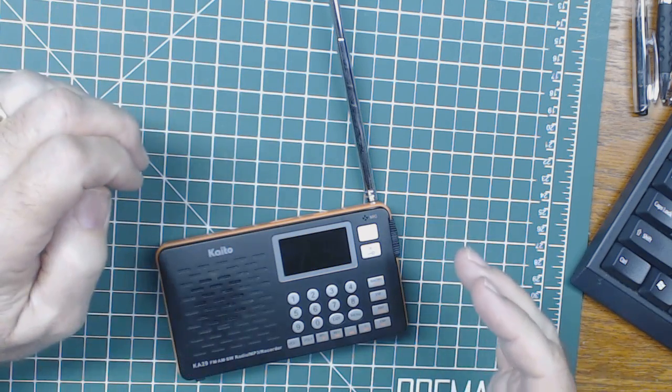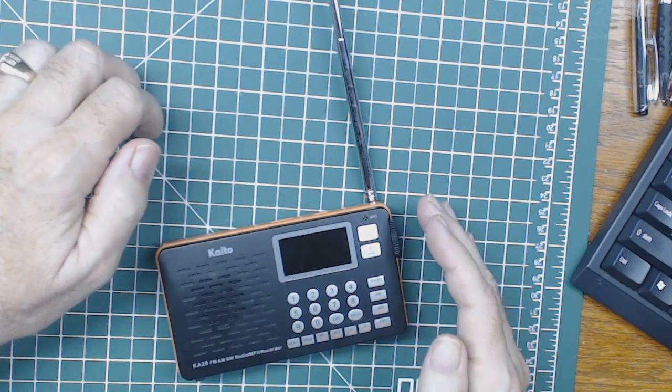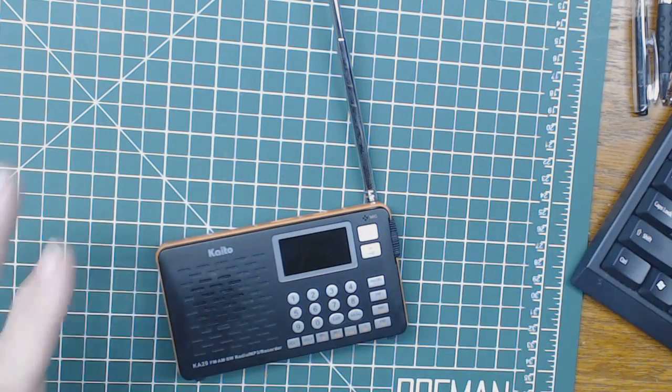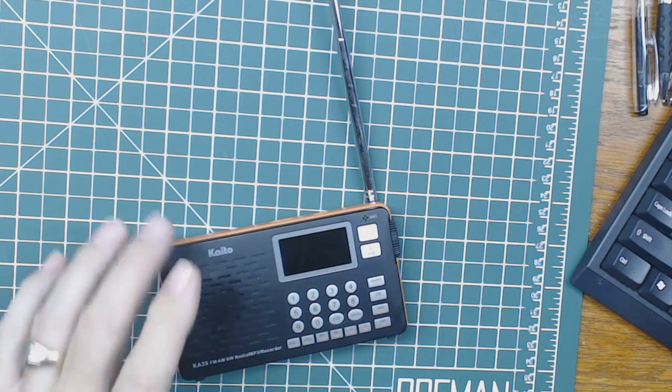It's got a ton of features. It's an AM shortwave, MP3 player, recorder. It does everything. So you get a lot for $35.